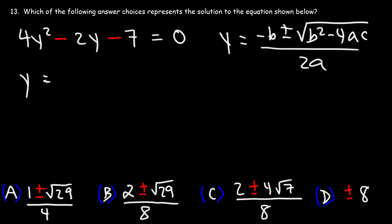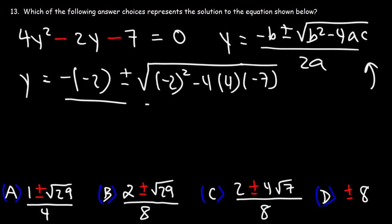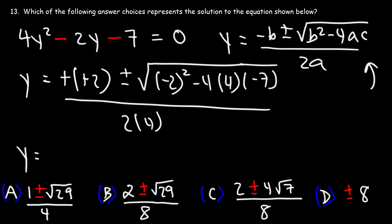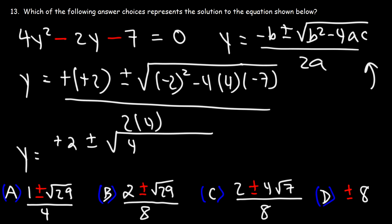Let's plug into the formula. Negative b is negative times negative 2, plus or minus the square root of negative 2 squared minus 4 times 4 times negative 7, all divided by 2 times 4. The two negatives make a positive 2. Negative 2 squared is 4, and negative 4 times 4 times negative 7 gives positive 112. So under the radical we have 4 plus 112 equals 116, and the denominator is 8.